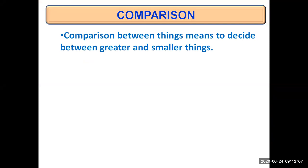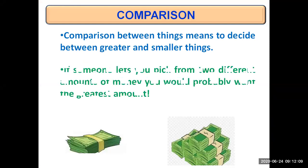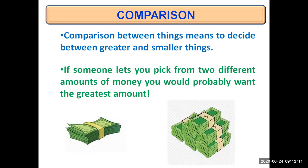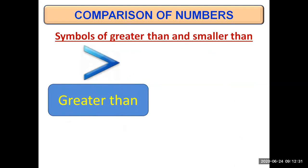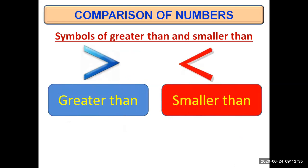Comparison means to decide between things which thing is greater and which thing is smaller. For example, if you are given two different amounts of money and someone lets you pick one from it, you would probably want the greatest amount. We use symbols of greater than and less than to mention which amount is greater and which amount is smaller.